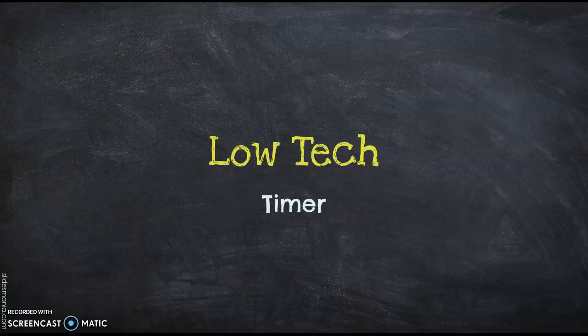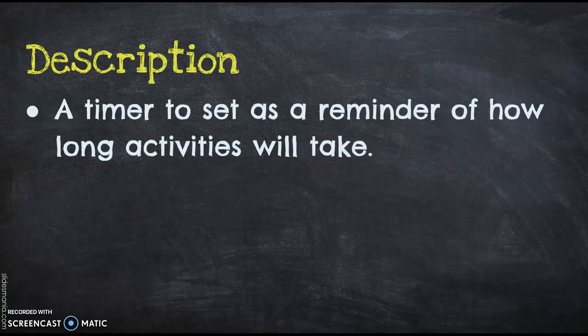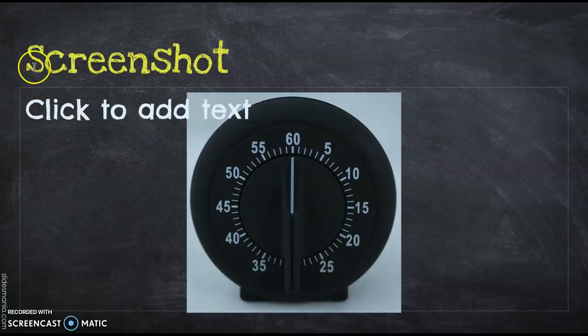Another low-tech timer. Basics are that you can buy it at amazon.com. Cost is $11.79. It's a regular timer to remind people how long activities are. Here is a screenshot of it and what it can be used for, which is keeping track of how long things take.